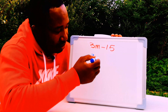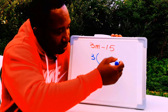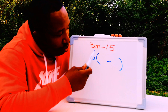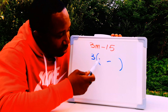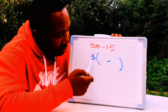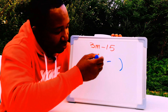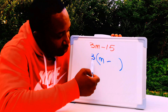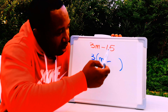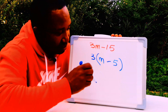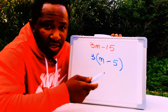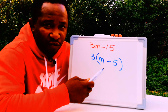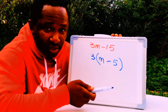We'll bring out 3 and open the bracket. There is a minus. When I multiply 3 by m I get 3m, and when I multiply 3 by 5 I get 15. So the result is 3(m - 5), and the common factor here is 3.